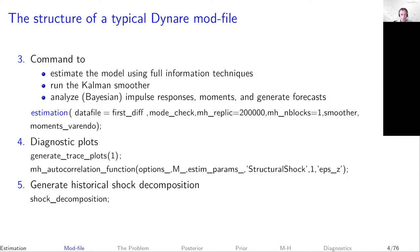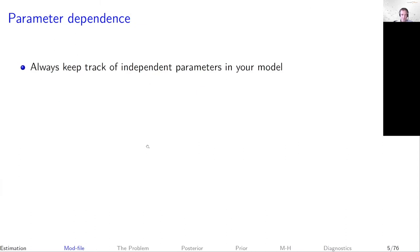Question: is it possible to obtain parameter estimates by constructing a time series in Dynare — just simulating one? You could do that, but the time series would be generated with the parameters you selected. If you simulate data and then estimate on that data, you should get back exactly the parameters you put in — so that's not going to be informative.